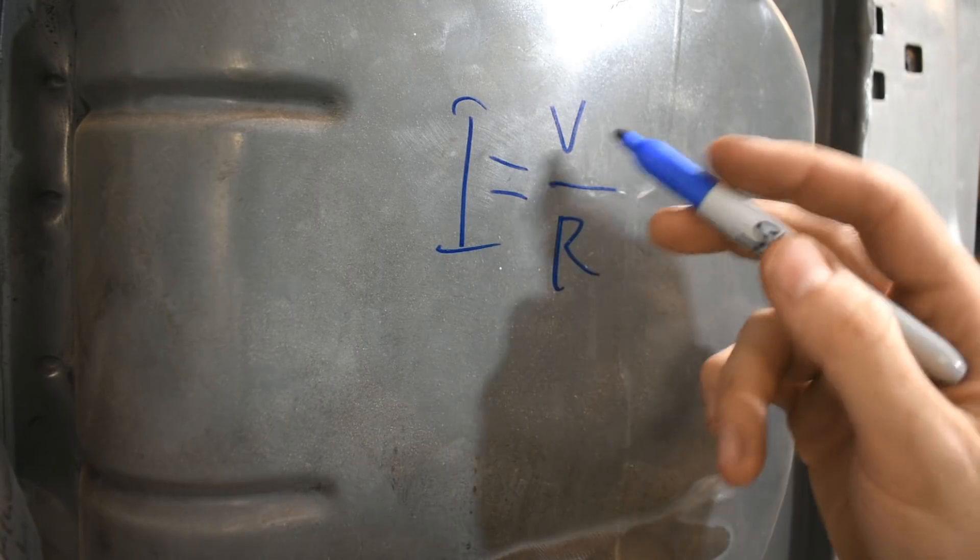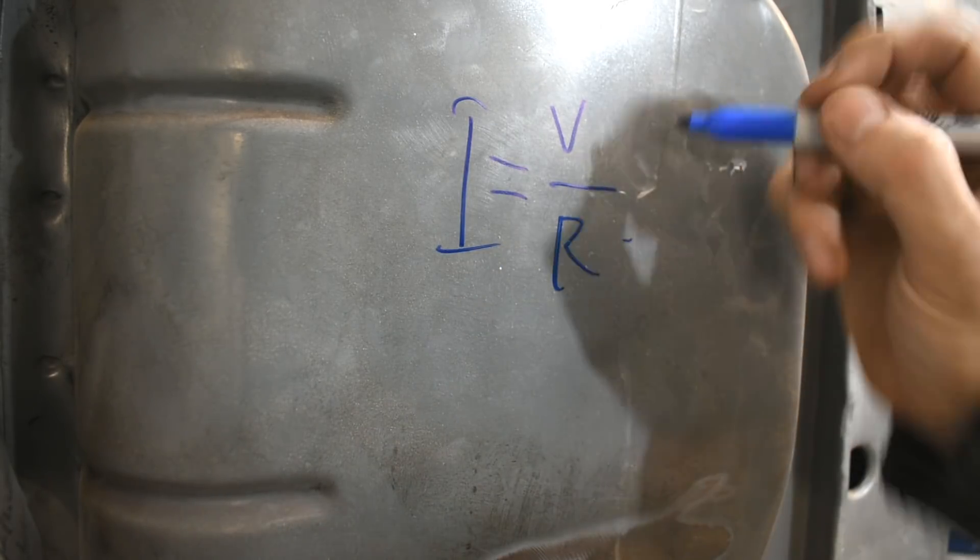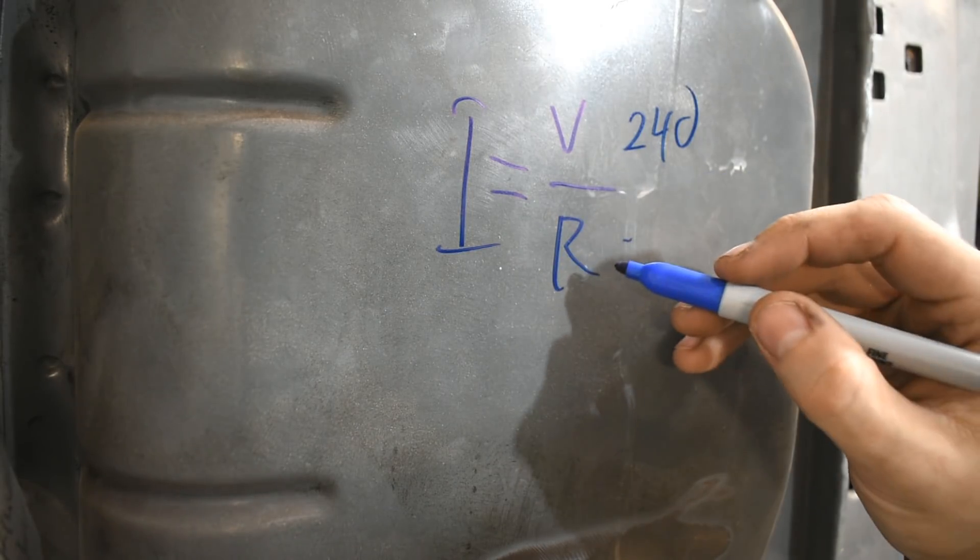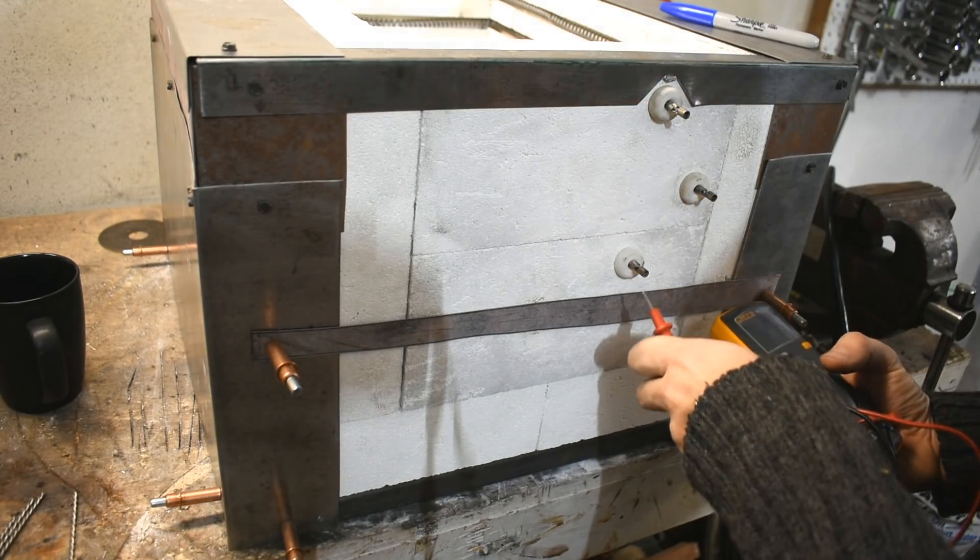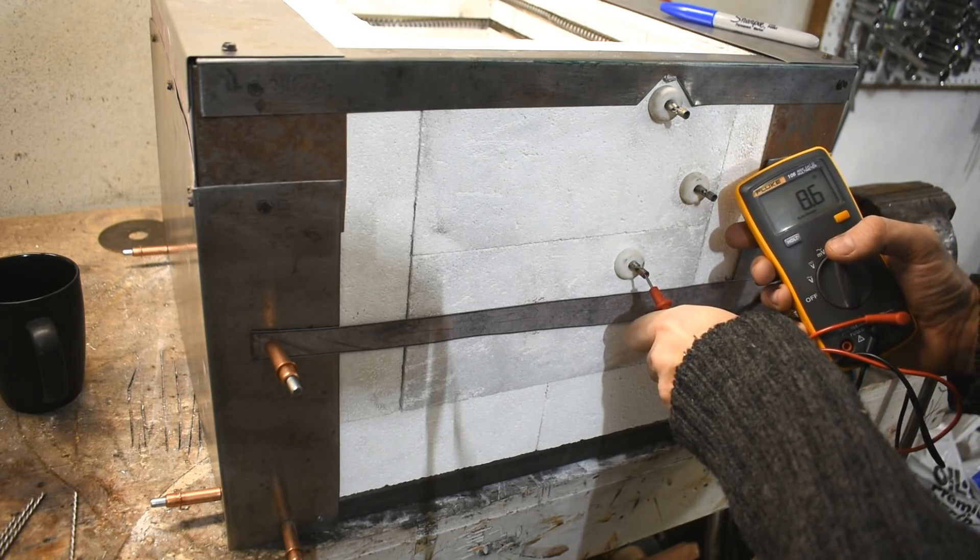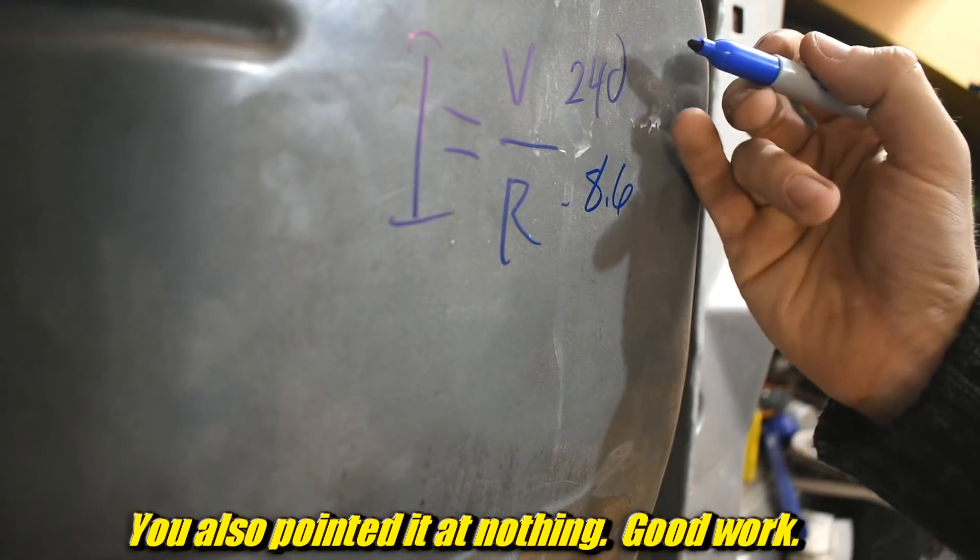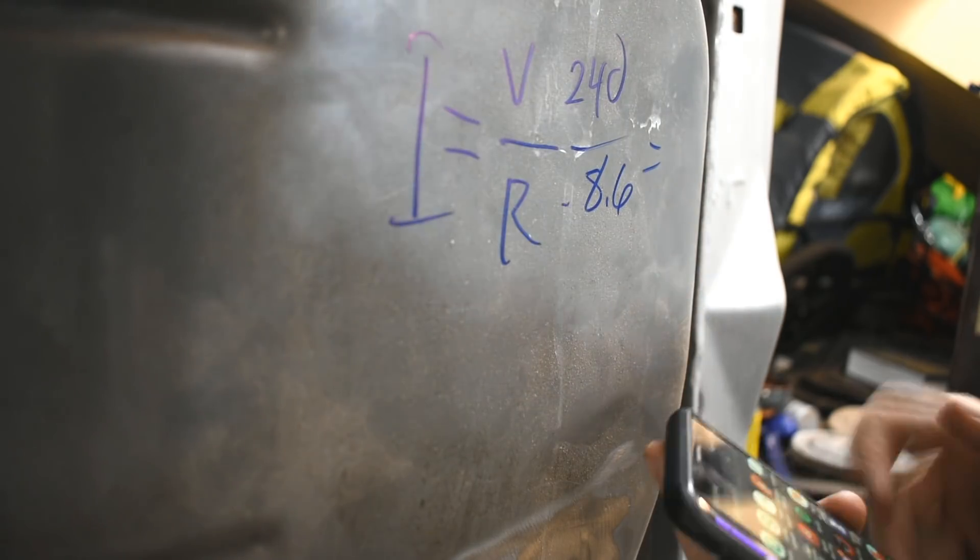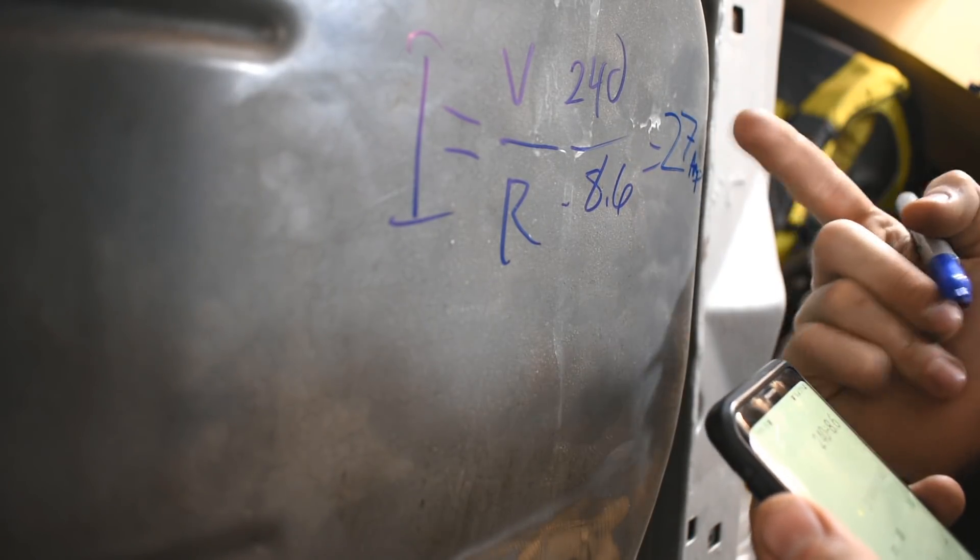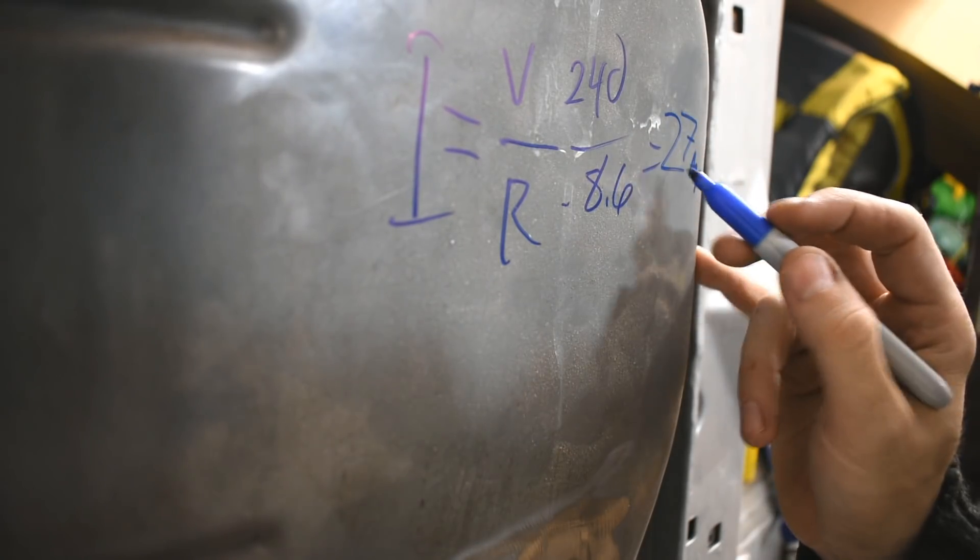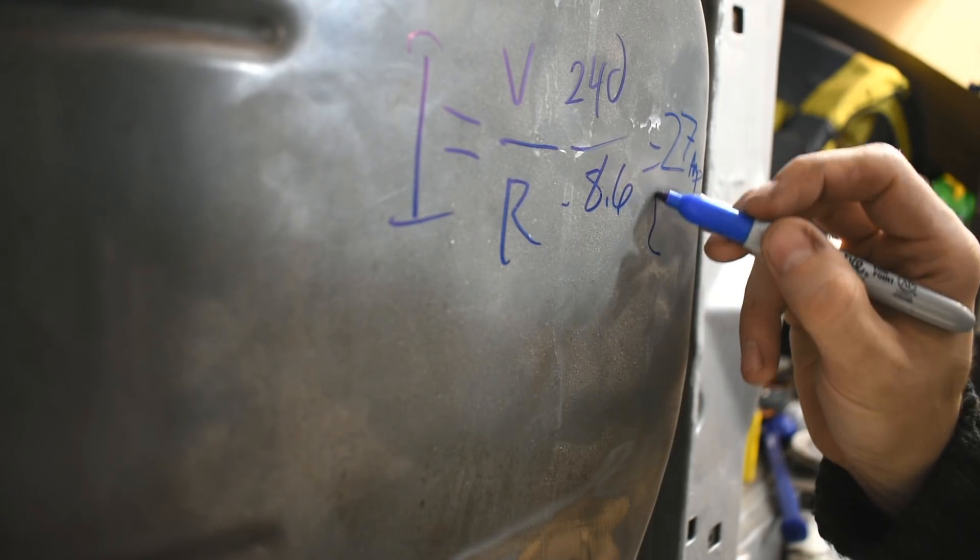So this is Ohm's Law. I equals V over R. Basically, voltage over the resistance equals I, the current, the amperage. We know the voltage. Voltage is 250 or 240. We can know the resistance in a minute. And that will tell us what the amperage, the amp draw, will be. If we check an element with the multimeter, stuck on Ohms, we get 8.5 Ohms, 8.6. So, 240 divided by 8.6 is 27 amps. Now, that's pretty high, especially given that there are two of these. So you'd be running 27 amps through one element and 27 through the other element. And you'd end up with way too many amps and probably a fire, right? It would be chaos.